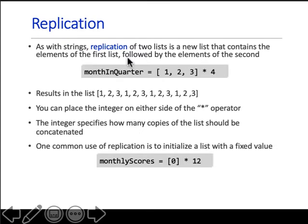Replication. With strings, you can replicate lists as new lists. If you have a given list as 1, 2, 3, you say replicate it four times. So it's 1, 2, 3, 1, 2, 3 four times. Month and quarter is now this list.